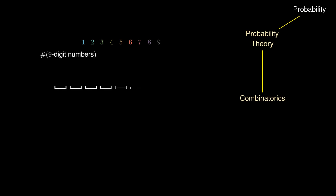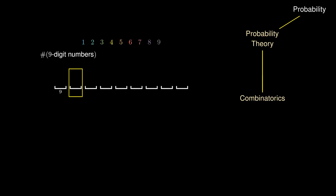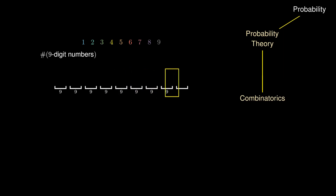We can consider 9 spaces to represent each of the 9 digits in the number and ask ourselves, for each space, how many possibilities are there? In the first space, we could choose from any of the 9 digits, giving us 9 possibilities. Moving on to the next digit, we could still use any of the 9 digits, giving 9 more possibilities. And for each following space, we could fill them with any of the 9 digits. Since these possibilities happen one after another, we multiply them in a row to obtain 9 to the 9, which gives us 43,046,721 possible 9-digit numbers.